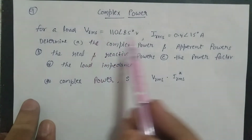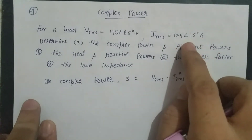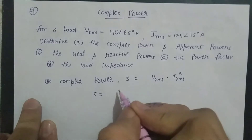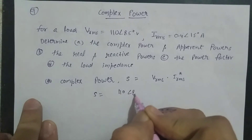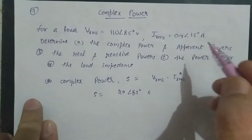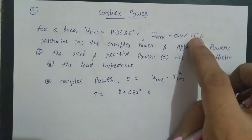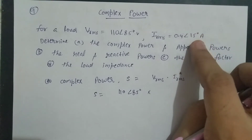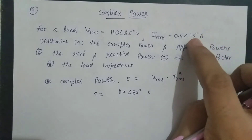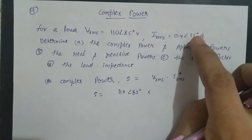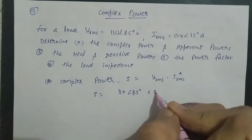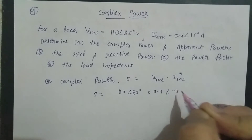V_RMS है 110∠85° और I_RMS है 0.4∠15°। इसका conjugate लेना है। Conjugate लेने के लिए जो भी angle होगा उसका sign opposite कर देना है — plus है तो minus हो जाएगा, minus है तो plus हो जाएगा। तो conjugate में angle का sign opposite हो जाता है, इसलिए 0.4∠−15° हो जाएगा।